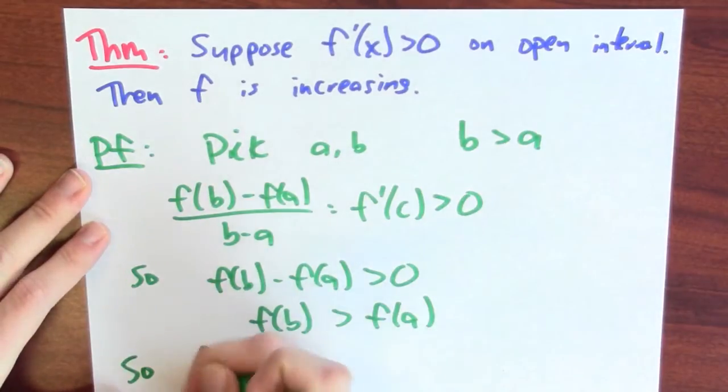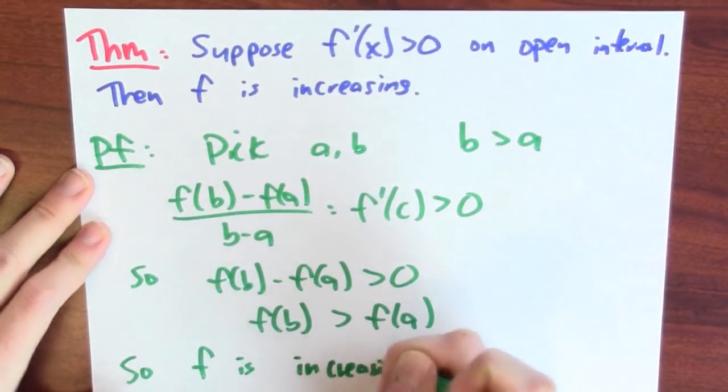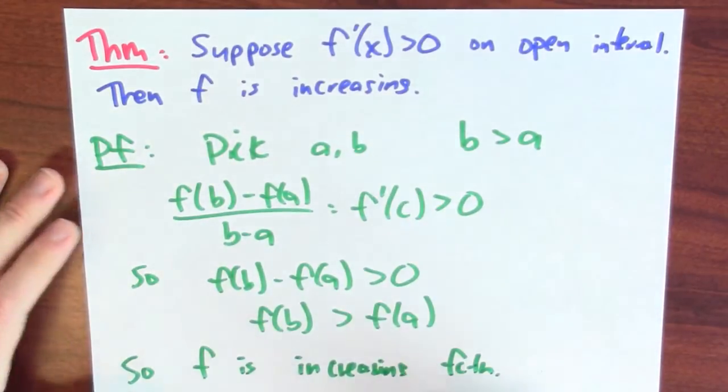So I can conclude that F is an increasing function, which is exactly what I wanted to show. If the derivative is positive on a whole interval, then the function is increasing on that interval. It's important to point out that I needed to know the sign of the derivative on that entire interval. The mean value theorem ends up picking out a single point C where it examines the derivative, but in order to cover all my bases — because I don't know what point C the mean value theorem might make me look at — I've got to control the sign of the derivative on the entire interval.